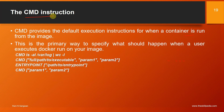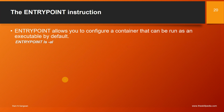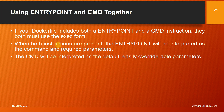The CMD instruction provides the default execution instructions for when a container is run from the image — the primary way to specify what should happen when the user executes docker run on your image. For example: CMD ls -al /var/log or CMD with a full path to an executable with parameters. The ENTRYPOINT instruction allows you to configure a container that can be run as an executable. For example: ENTRYPOINT ls -al.